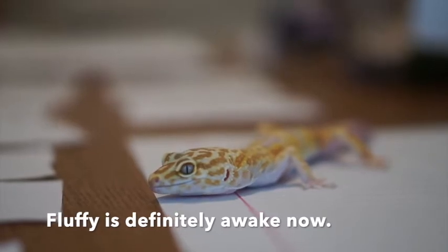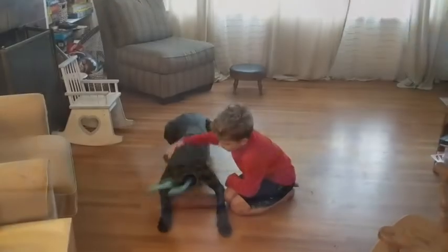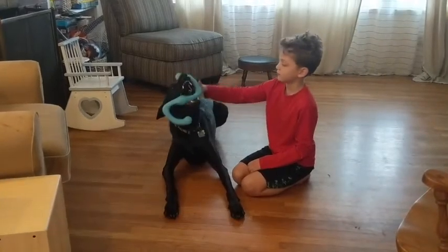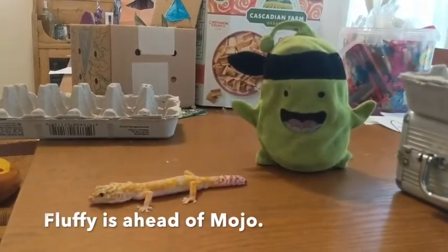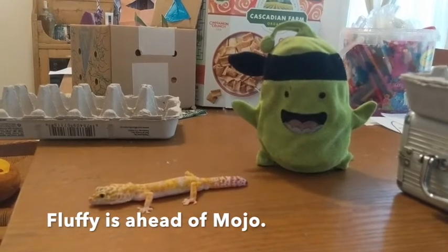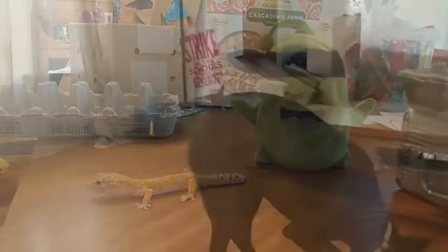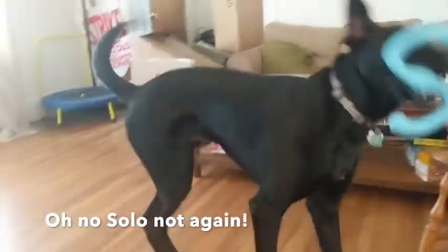Go away, go away. Fluffy is definitely awake now. Sebastian and Solo get along. Fluffy is ahead of Mojo. Go Fluffy, not moving very fast. Oh no, Solo, not again.